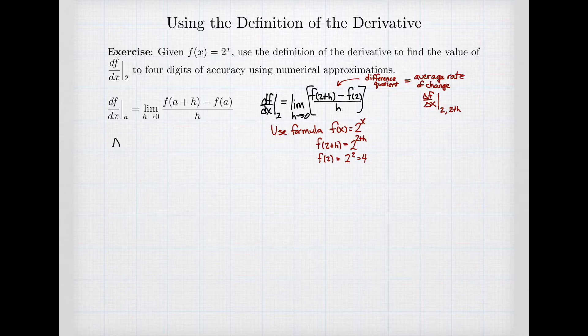Consequently, my average rate of change, not the derivative, but the average rate, is going to be 2^(2+h) minus 4 divided by h. So this is the formula that I am calculating in the average rate of change. And so I want to now calculate a limit of this. We need a limit as h goes to 0. So we're going to approximate it using a table.